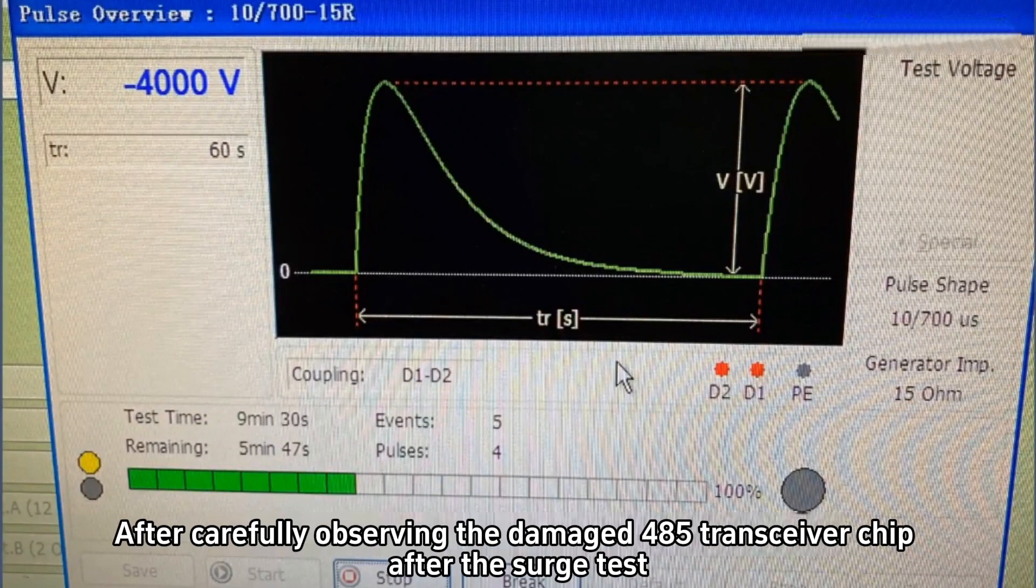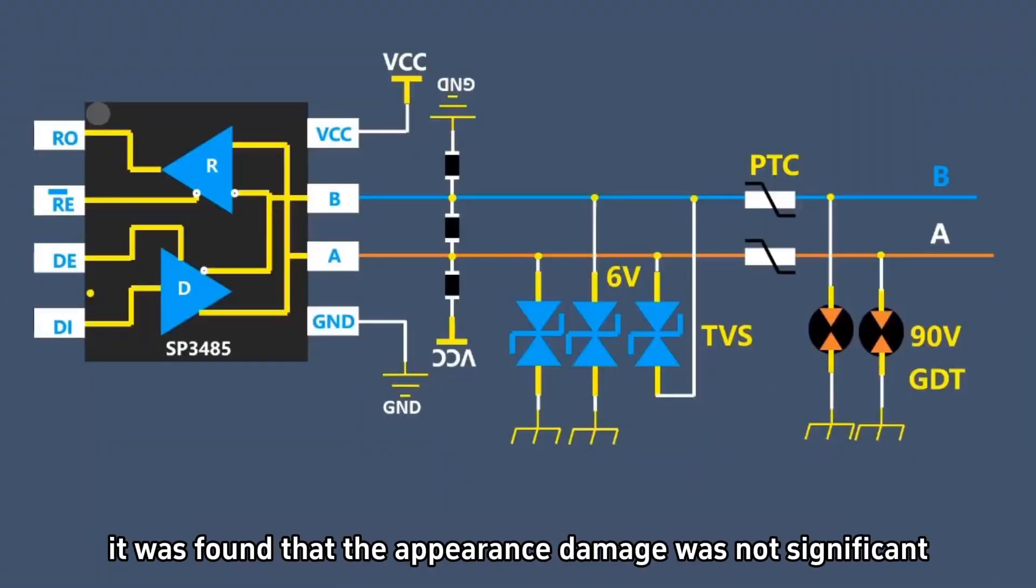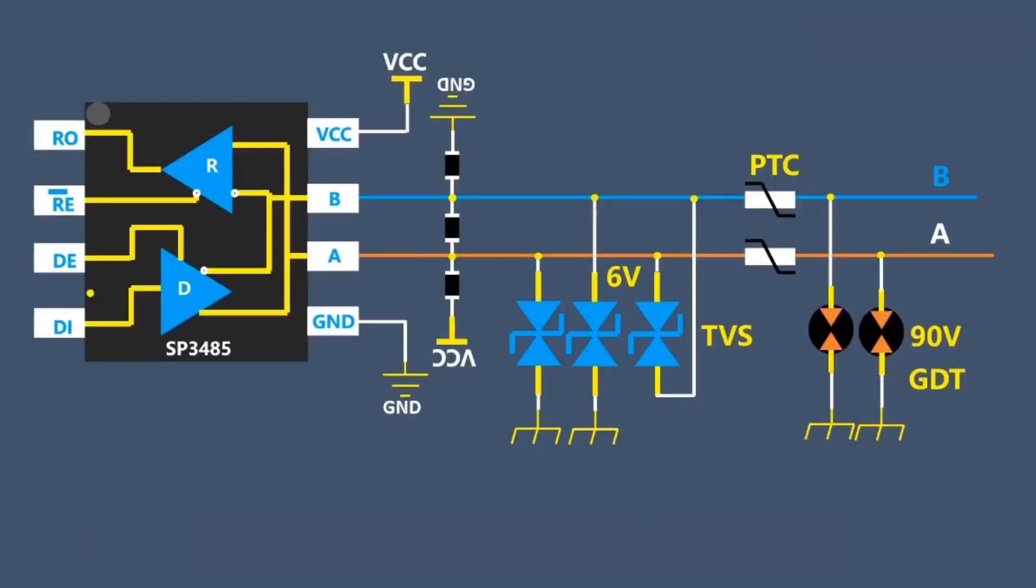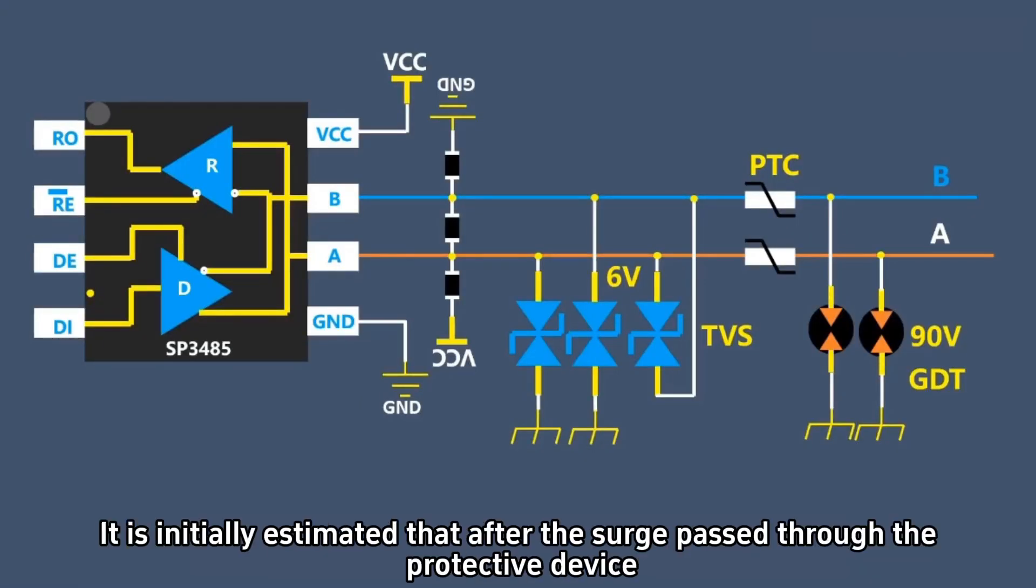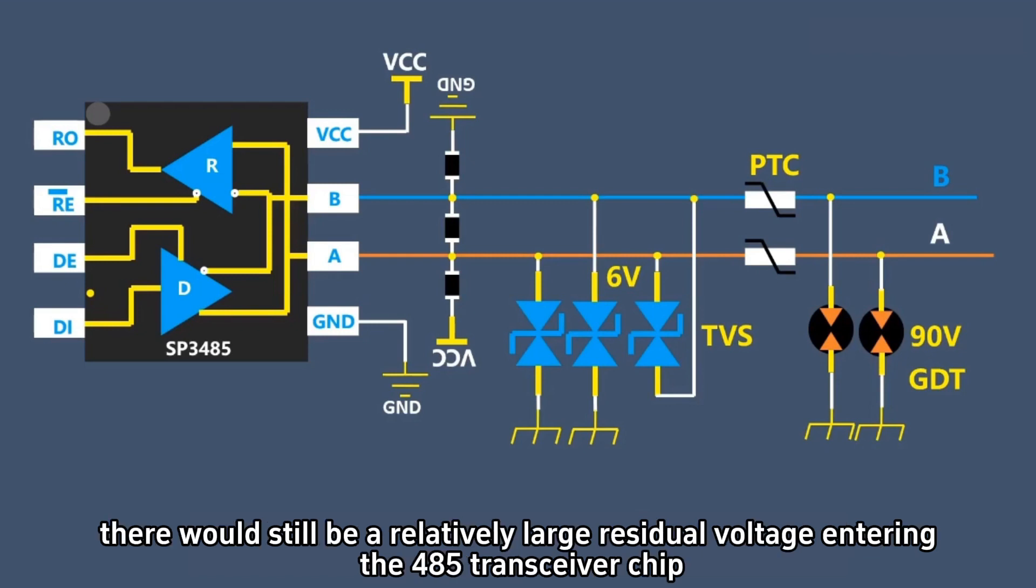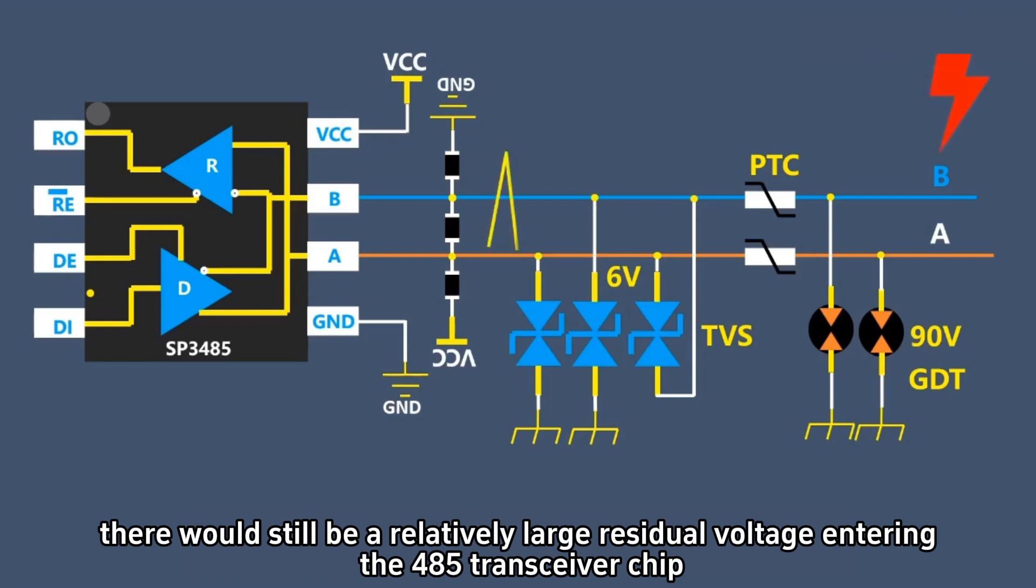After carefully observing the damaged 485 transceiver chip after the surge test, it was found that the appearance damage was not significant, and there was no large area damage. It is initially estimated that after the surge passed through the protective device, there would still be a relatively large residual voltage entering the 485 transceiver chip, thereby causing over-voltage damage to the transceiver chip.